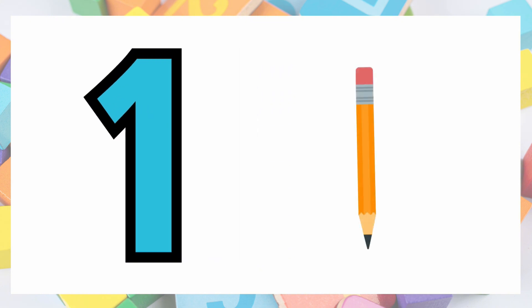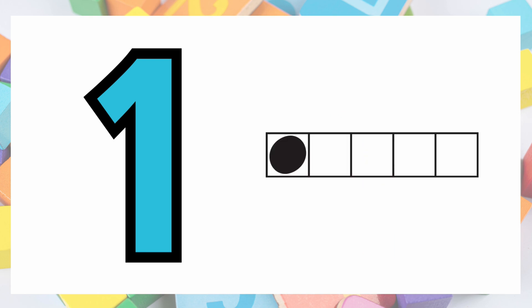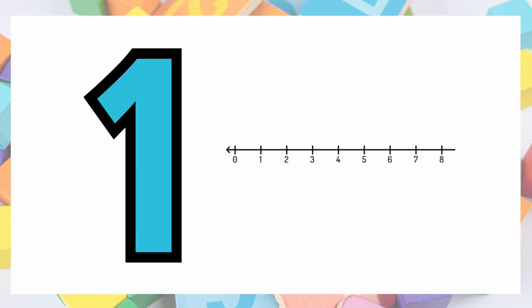Here is one pencil. Here is one finger. Here is number one on the five-frame. There is number one on the die, and here is a one on the number line.